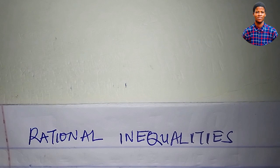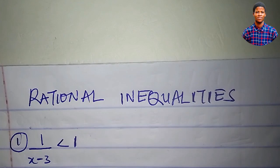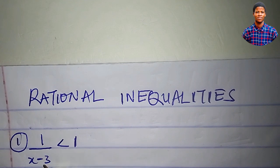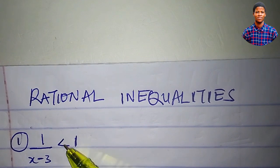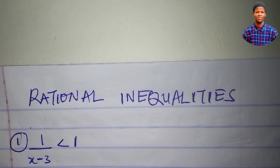In this video, I will teach you how to determine the solution set of a rational inequality. Let us determine the range of values of x that satisfies this inequality: 1 over x minus 3, less than 1.